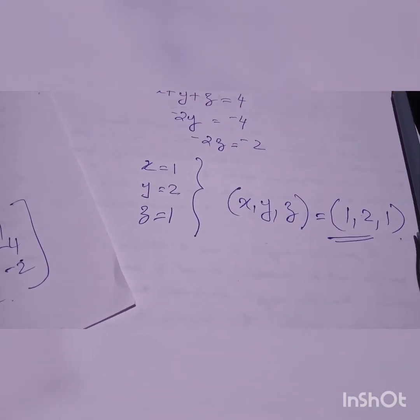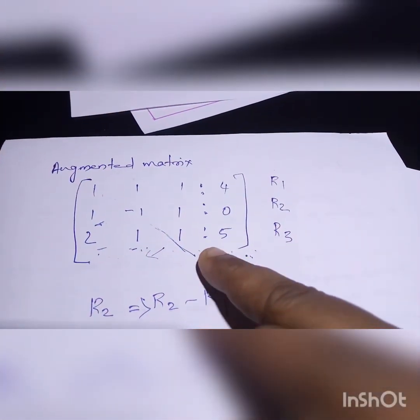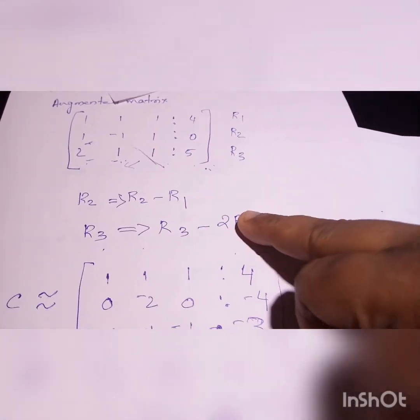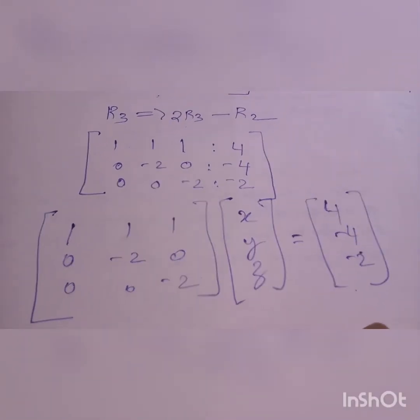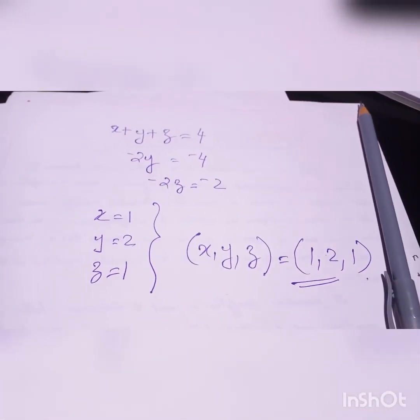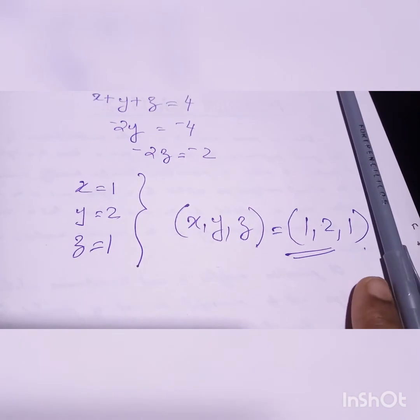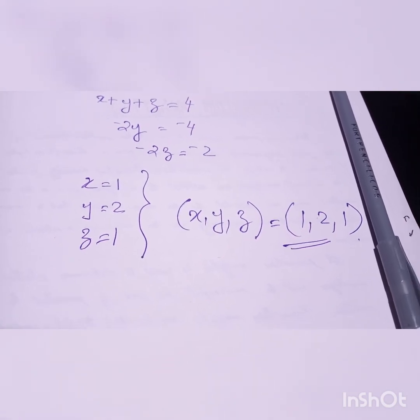So this is our answer: x, y, z equals 1, 2, 1. To summarize: first get the equations from the question, make the augmented matrix, then make values below the diagonal equal to 0 using row multiplications. Separate it back into matrix form, generate the equations, and calculate the values for variables x, y, and z. This is all about the Gauss Elimination Method. Hope the topic is clear. Thank you.